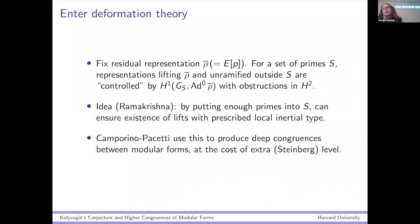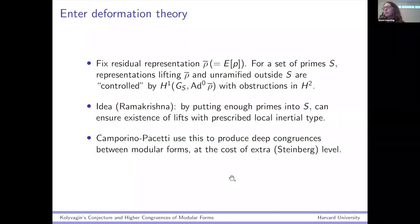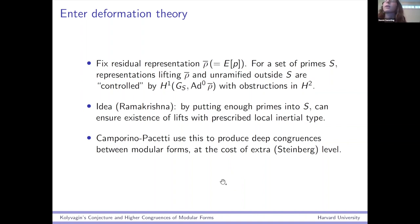This idea — I believe it first appears in the literature in a paper by Caprino and Pacchetti — is that this same kind of process can also be used to make really deep congruences between modular forms. Ramakrishna started with something mod P; we start with something characteristic zero and want to find a different lift. You're going to have extra level corresponding to the extra primes you're putting in, but it's going to be Steinberg level — on the modular forms side that means it's going to be squarefree level. All the level raising stuff works well, and this Steinberg level causes no problems for us.